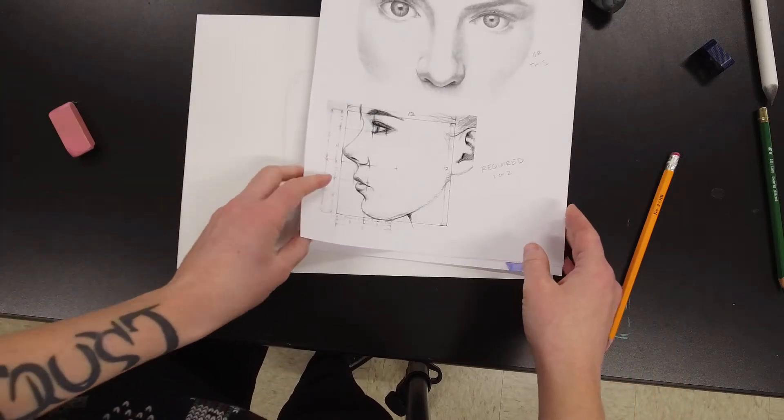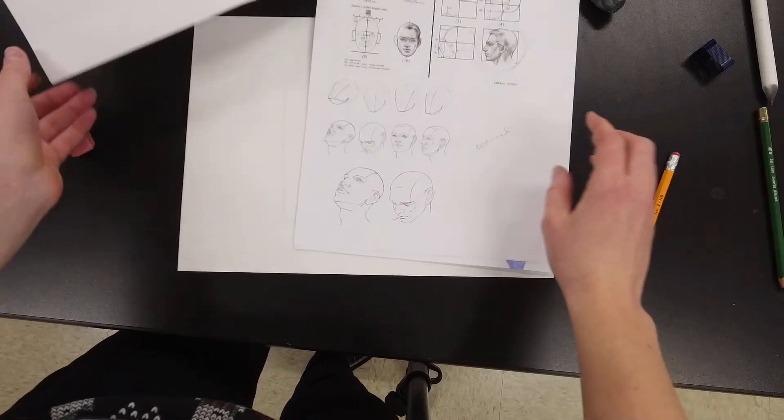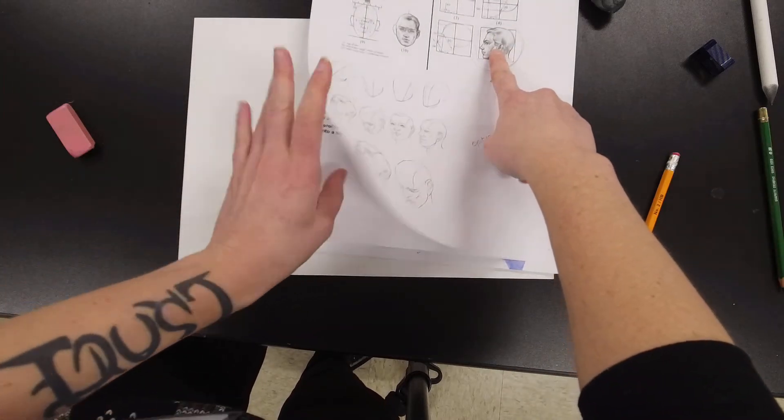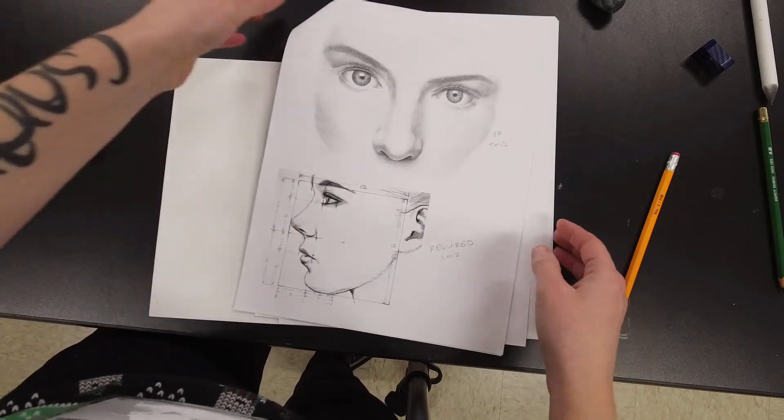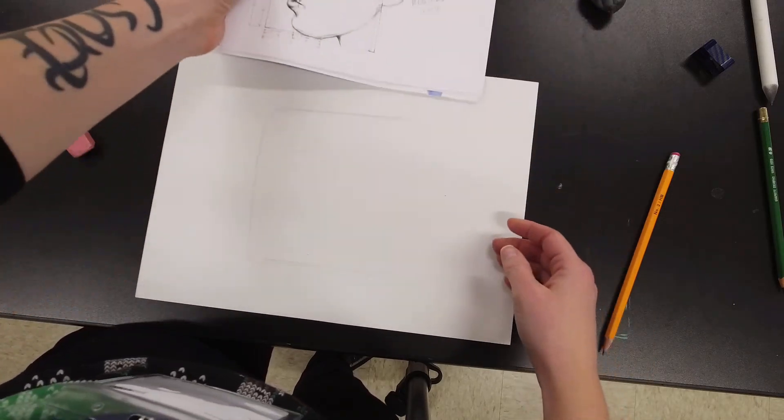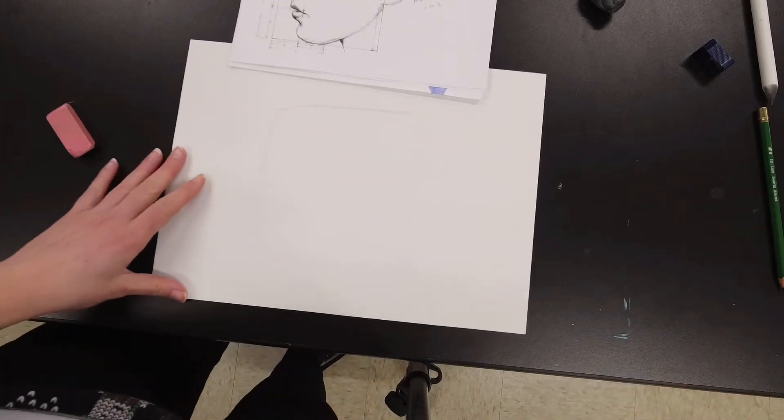Remember there are three options. You can do this one, this one, or this one. Whichever profile view you choose to do, it is up to you. They do all start kind of similarly and each image does have its own sort of beginning phases marked on the packet.